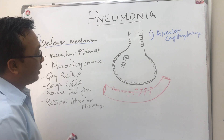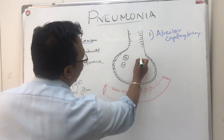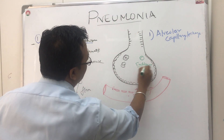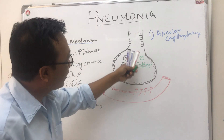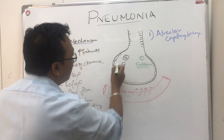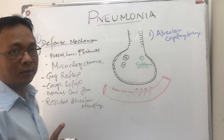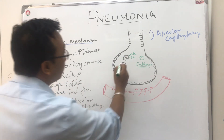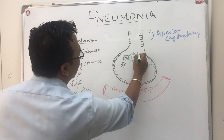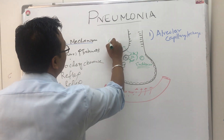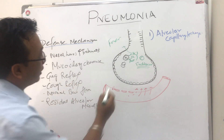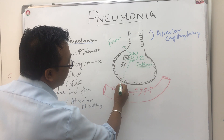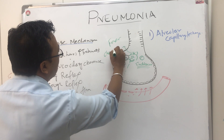How does this alveolar capillary leakage take place? When there is bacteria, it will release endotoxins. When there are endotoxins and bacteria, the macrophages will release all the inflammatory markers like cytokines and interleukins, and also tumor necrosis factor, causing pyrexia — fever. And these interleukins and tumor necrosis factor are also doing chemotaxis.